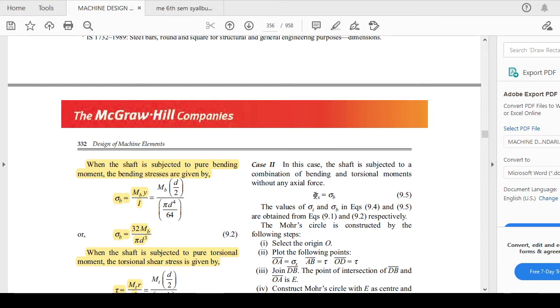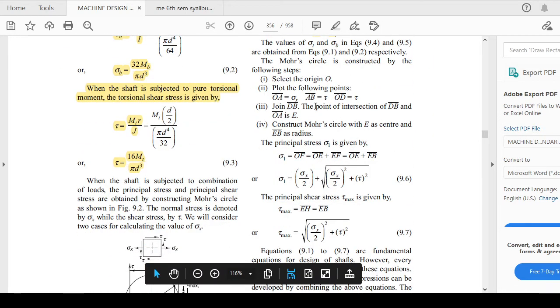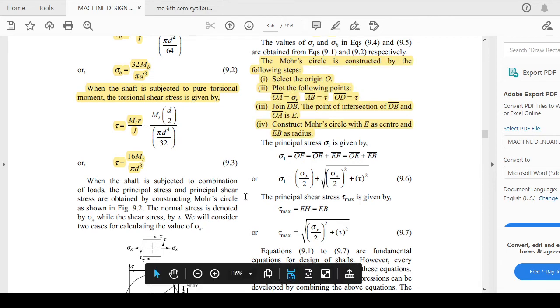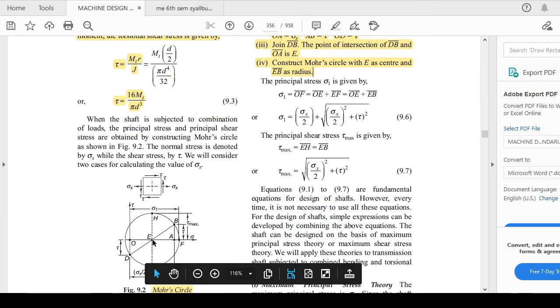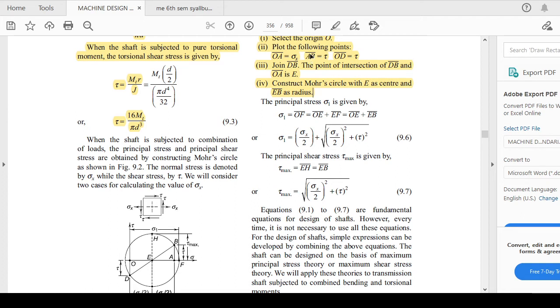For the construction of Mohr's circle, these are the following steps you must follow. First of all, select the origin, then plot OA. You have to first fix point O, then plot line OA in the direction of x as σ_x magnitude, then AB with the value of τ, which is shear stress.